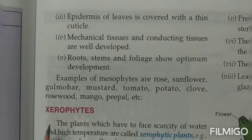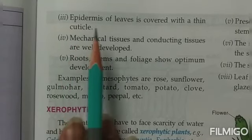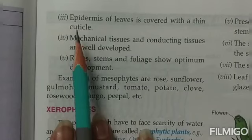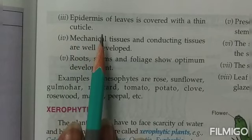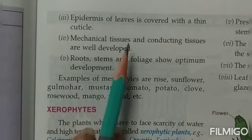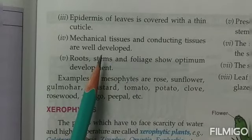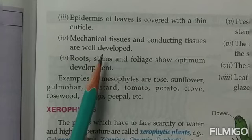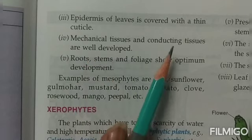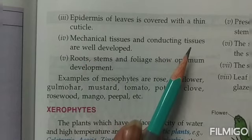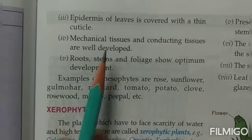The epidermis of the leaf is covered with a thin cuticle. The epidermis is the uppermost layer of cells that make up the leaf. Mechanical tissues and conducting tissues are well developed. The conducting tissue is not only present in the leaves but also throughout the entire length of the plant — both tissues are well developed.